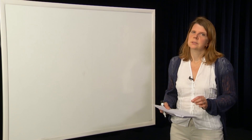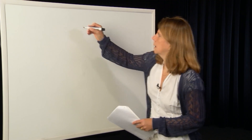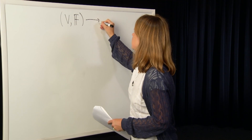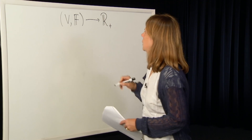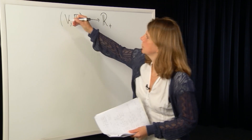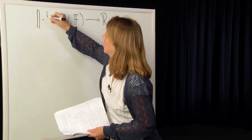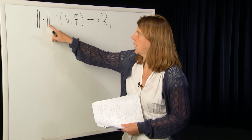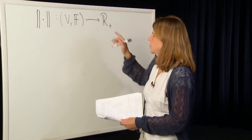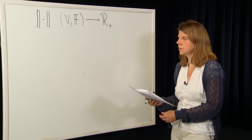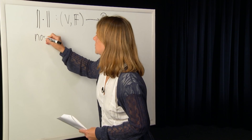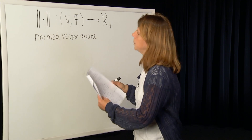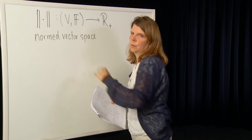Basically, a norm is a special map between vector spaces, which takes elements from a vector space V over a field F, and maps those elements to the positive real line. So these are positive reals, and we use the notation of these two parallel bars to indicate the operation of a norm. The dot here just means that that's where that element of the vector space goes. So we call a normed vector space to be such a vector space V which has a norm defined on it.